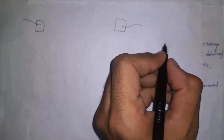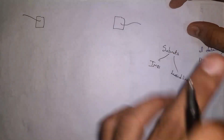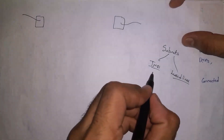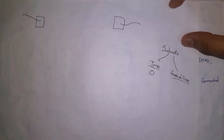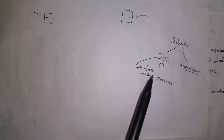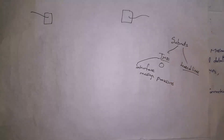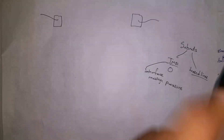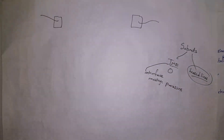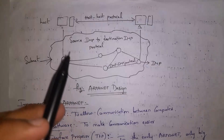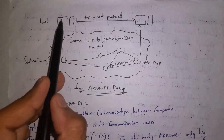So my computer is considered as a host and my friend's computer is also considered as a host. Hosts are the computers that need to communicate. Subnet is a network that connects hosts. Subnet contains two parts: IMPs and leased lines. IMPs are devices like routers — for example, by using a router you can connect to Wi-Fi. IMPs stand for Interface Message Processors; they are devices like routers, also called special mini-computers. By using these devices, hosts can communicate with each other. Subnet also contains leased lines, which are cable connections used to connect IMP devices with host computers.